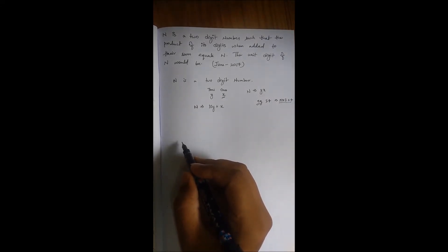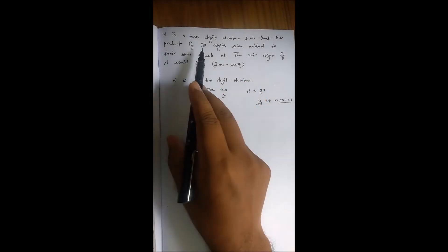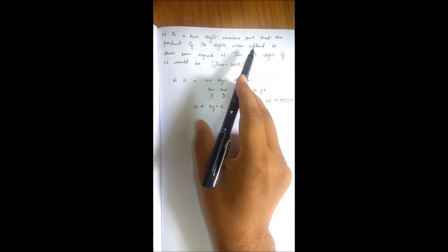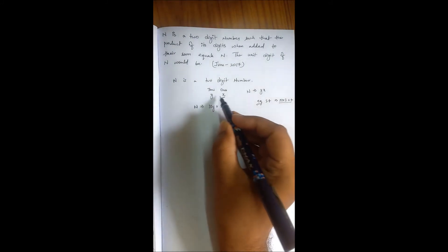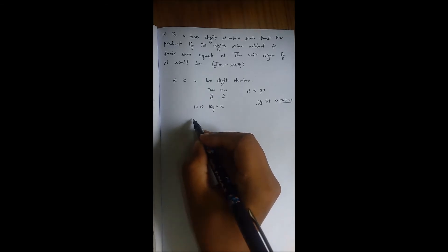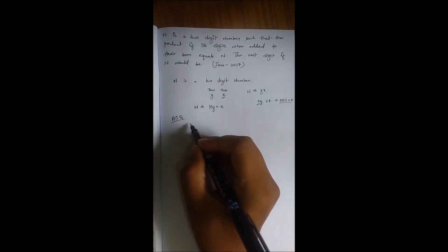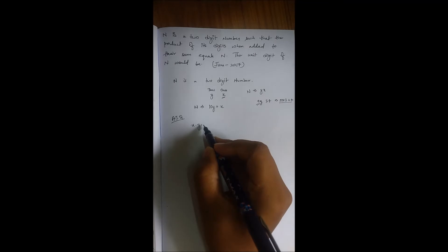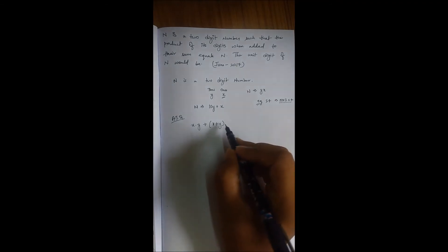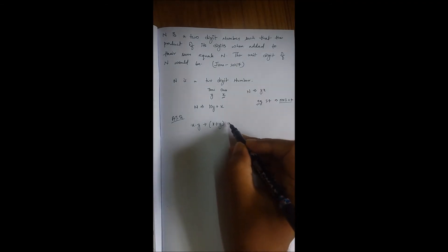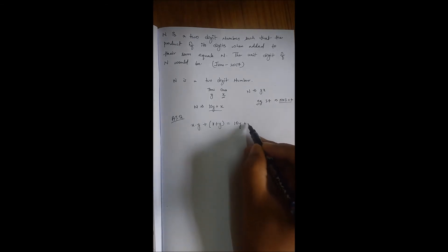So in the question it is given that the product of its digits when added to their sum - it means product of its digits. Digits are X and Y. So product of its digits are X into Y, when added to their sum means plus X plus Y. It will give the number itself. The number is 10Y plus X.